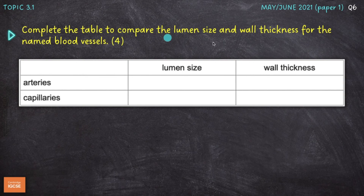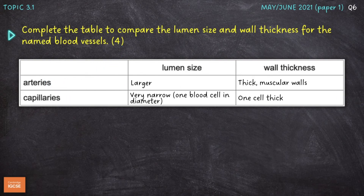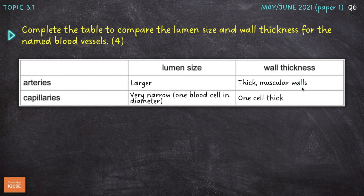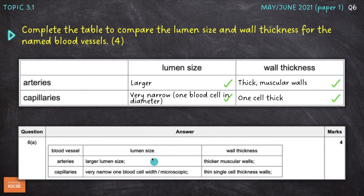Complete the table to compare the lumen size and wall thickness for the named blood vessels for 4 marks. We're comparing arteries and capillaries here. Arteries have larger lumens than capillaries, and capillaries have extremely narrow lumens — one blood cell thick in diameter. In terms of wall thickness, arteries have thick muscular walls to deal with the high pressure blood that flows through them, and the walls of capillaries are only one cell thick, which enables gaseous exchange.